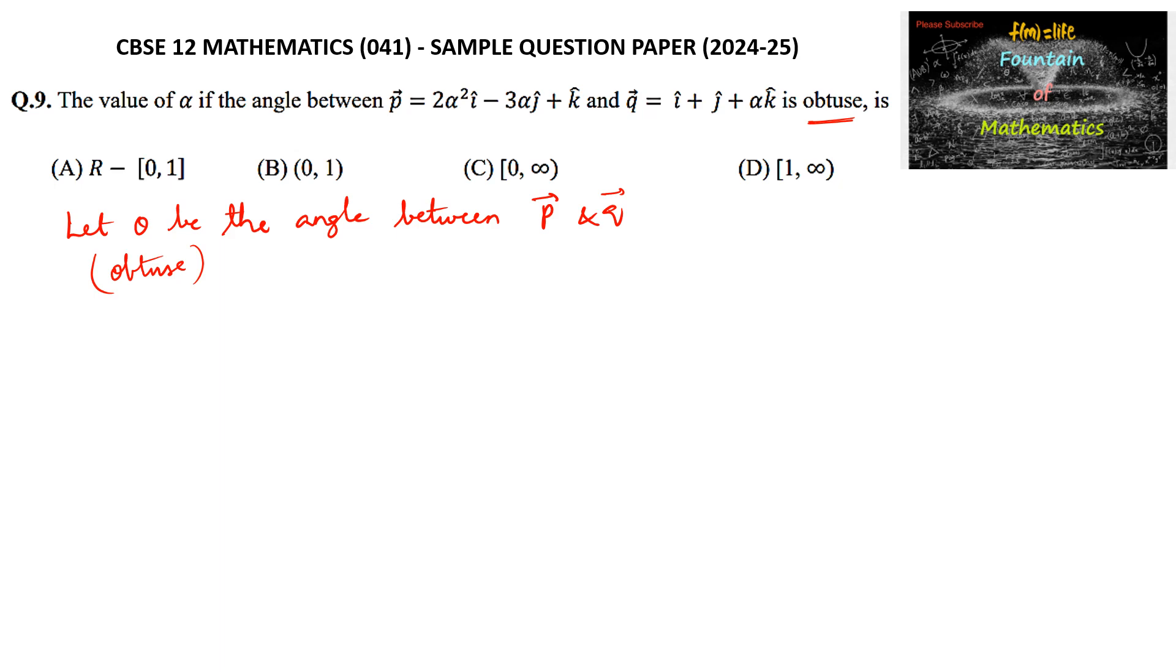So we know that if theta is the angle between the two vectors: if theta is acute, cos theta is positive, and cos theta is negative when it is an obtuse angle.